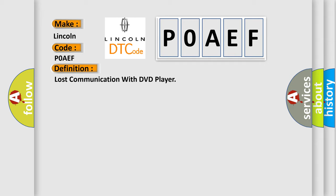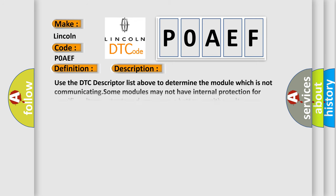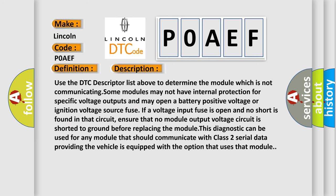And now this is a short description of this DTC code. Use the DTC descriptor list above to determine the module which is not communicating. Some modules may not have internal protection for specific voltage outputs and may open a battery positive voltage or ignition voltage source fuse if a voltage input fuse is open and no short is found in that circuit.